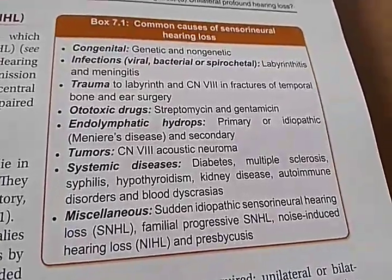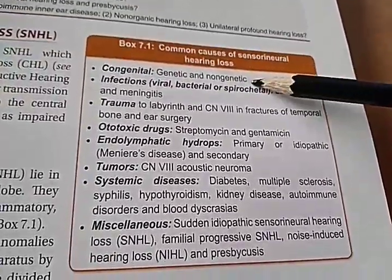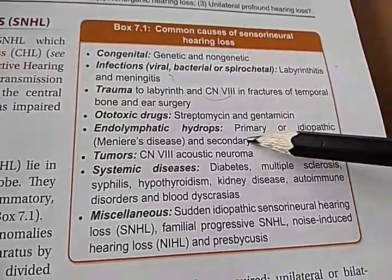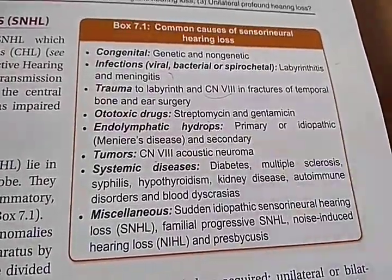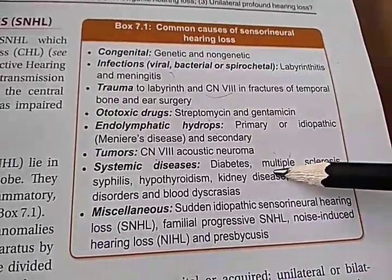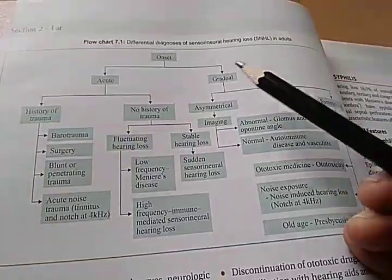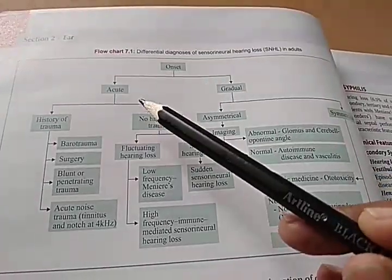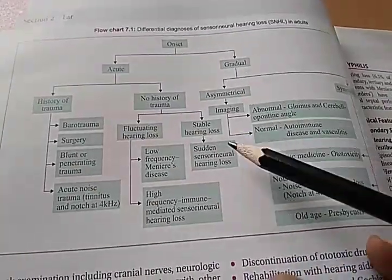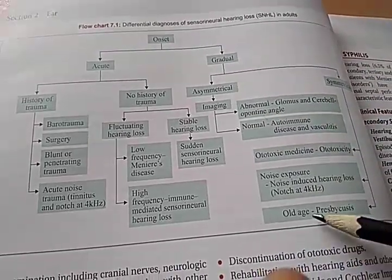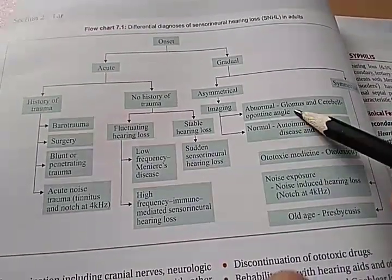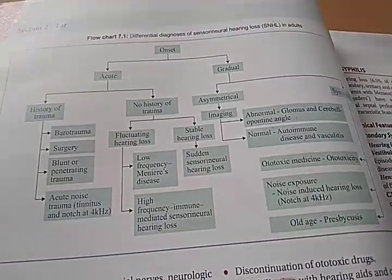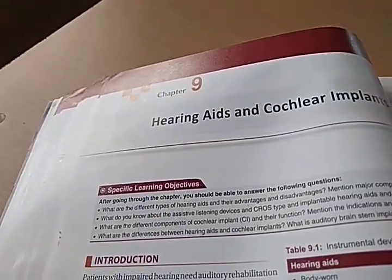Common causes of sensorineural hearing loss include genetic causes, meningitis, labyrinthitis, nerve trauma, ototoxic drugs like streptomycin and gentamicin, and tumors. They have given a flowchart to diagnose the cause — acute onset vs. gradual onset, trauma history vs. no trauma history, asymmetrical vs. symmetrical — which could be ototoxic, autoimmune, tumor, noise exposure, or old age. They then discuss hearing aids and cochlear implants.